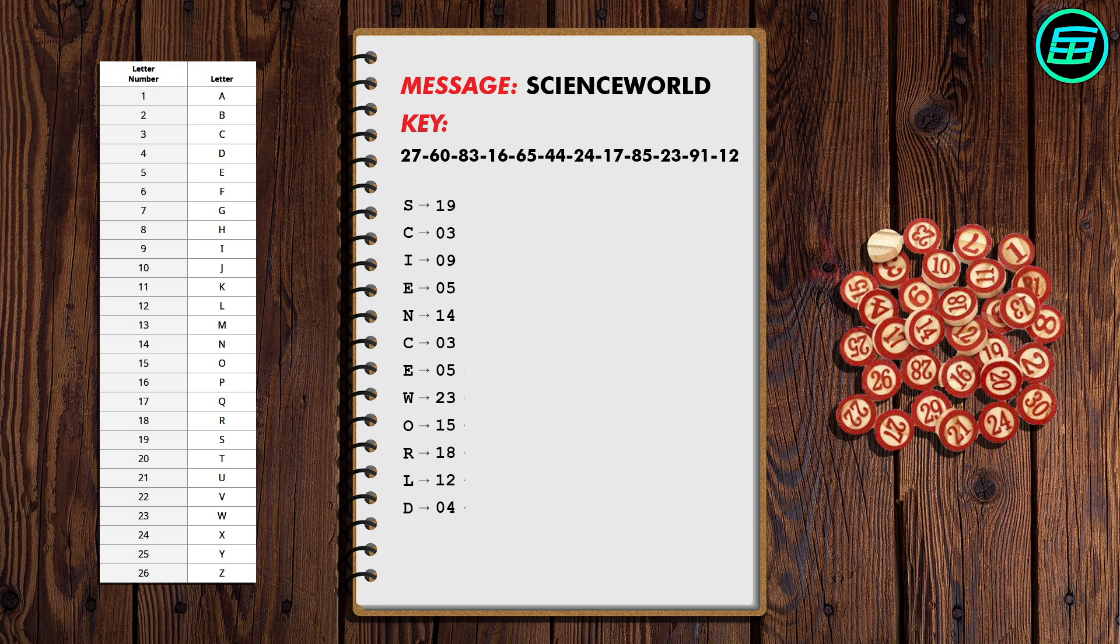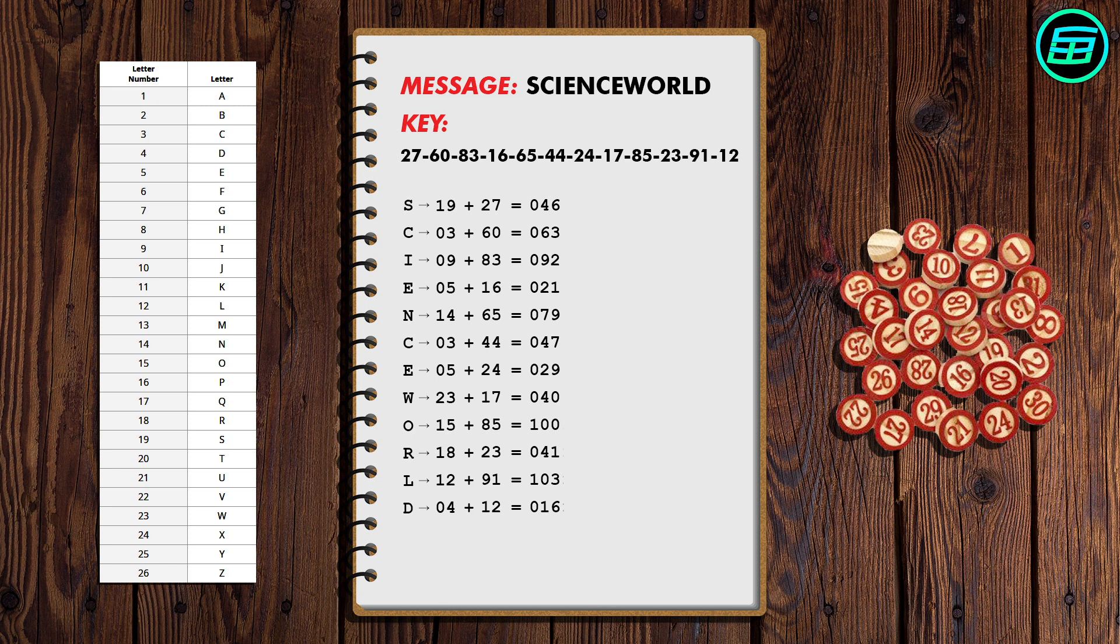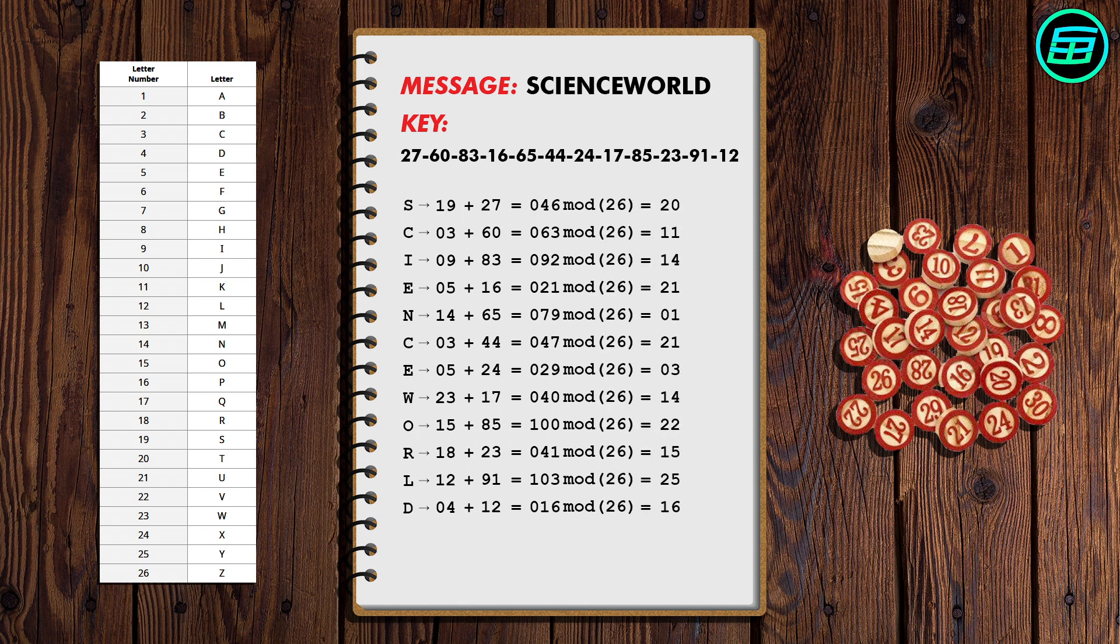If we then add these numbers to the numbers on the key, one at a time, we get this sequence. In order to encrypt the message, we have to subtract 26 or multiples of 26 if the number is bigger than 26. If we convert these numbers to letters, we get the encrypted form of Science World.